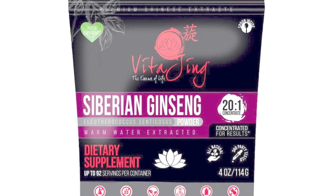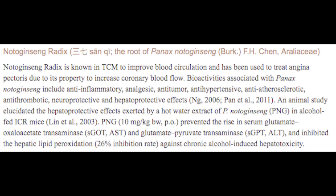Another really profound herb for mitigating the damage of alcohol to the liver is ginseng. Traditionally, ginseng is a chi tonic that has been used in clinical and traditional medicine to increase blood flow throughout the body. According to one animal study on ginseng's liver-protective effects, it was found that ginseng prevented a rise in serum glutamate pyruvate transaminase and inhibited liver lipid peroxidation by 26%, providing protective effects against chronic alcohol-induced liver toxicity.